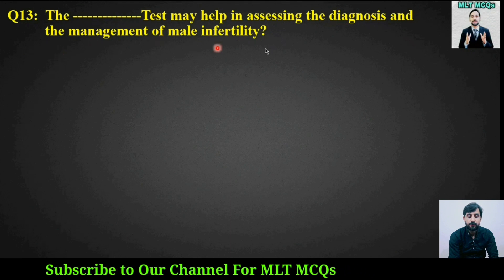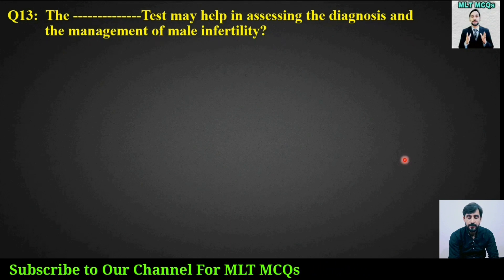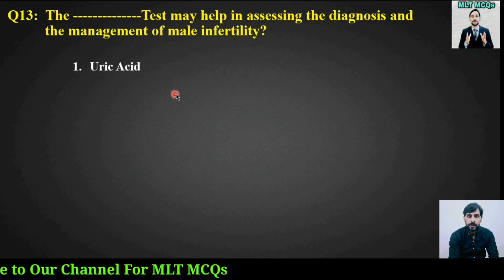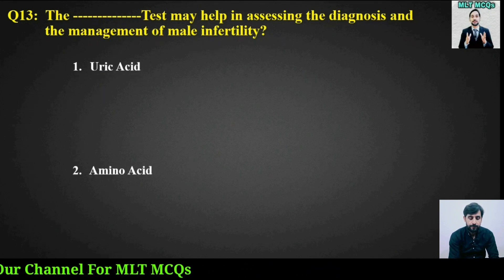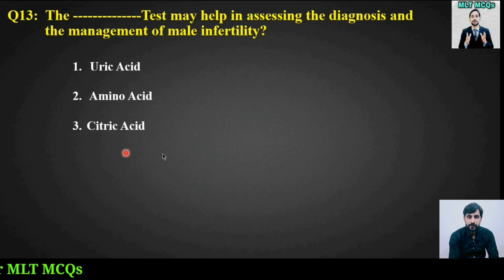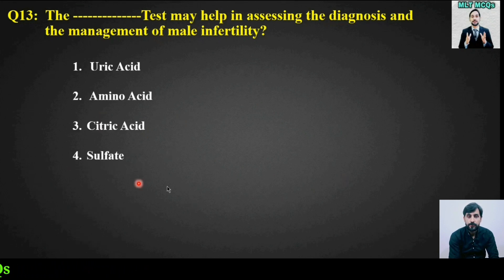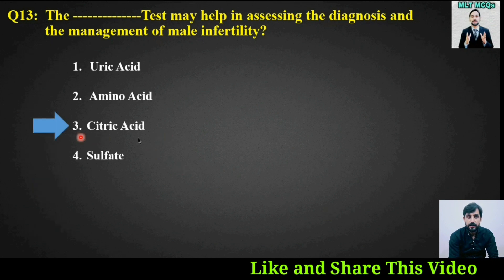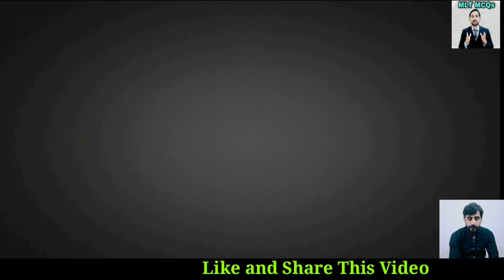MCQ number thirteen: Which test may help in assessing the diagnosis and management of male infertility? Options are: uric acid, amino acid, citric acid, or sulfate. The right answer is option number three — citric acid.